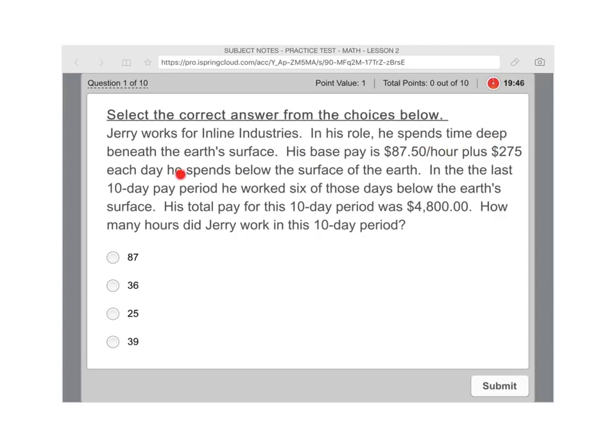So it says Jerry works for inline industries. His role, he spends time deep beneath the earth surface. His base pay is $87.50 an hour plus $275 for each day he spends below the earth surface. In the last 10 day period, he works six of those days below the earth surface. His total pay for this 10 day period was $4,800. How many hours did Jerry work in this 10 day period?